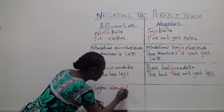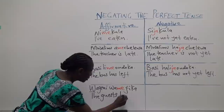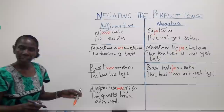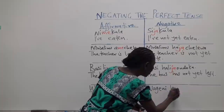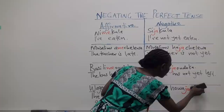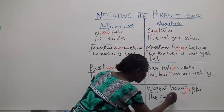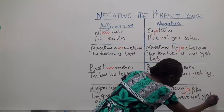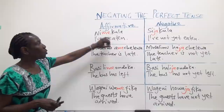The English translation of another sentence: 'The guests have arrived.' In negating this sentence in Swahili, the translation would be 'The guests have not yet arrived.' From these sentences, we can see how we simply replace ME with JA when negating the perfect tense.